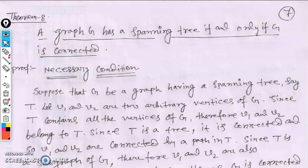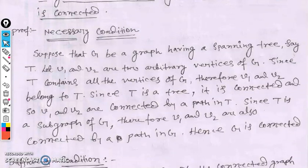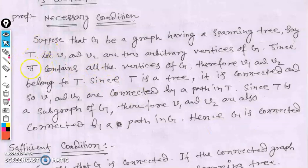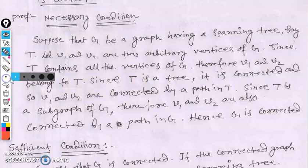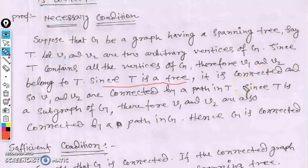For the necessary condition: suppose G is a graph having a spanning tree T. Let v1 and v2 be any two arbitrary vertices of G. Since T contains all vertices of G (by definition of spanning tree), T contains both v1 and v2. Since T is a tree, it is connected, so v1 and v2 are connected by a path in T.